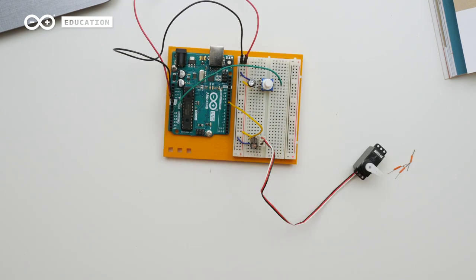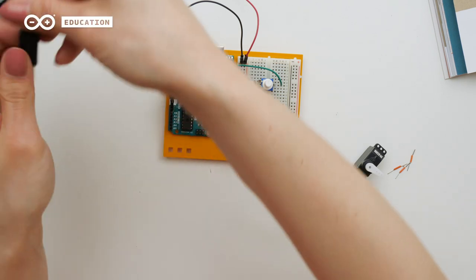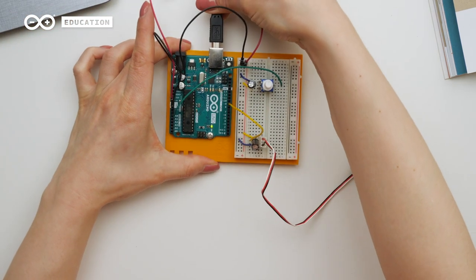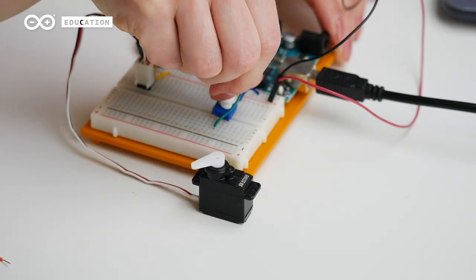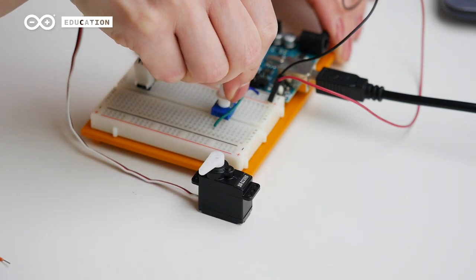Now that we're done, we can connect our board to the computer and upload the example code named Project 5 Servo Mood Indicator. Now you should be able to control the shaft by turning the potentiometer.